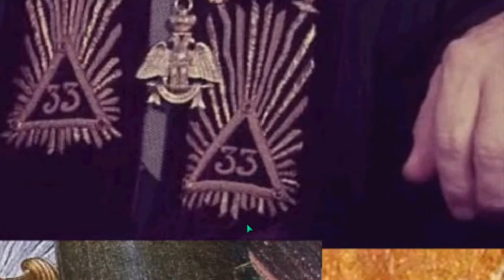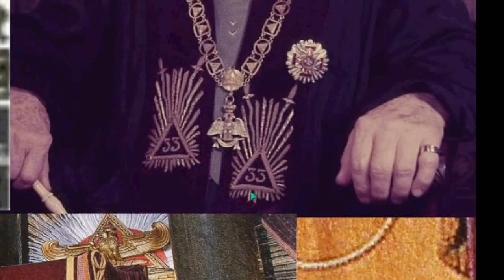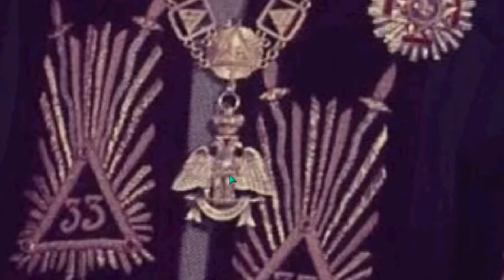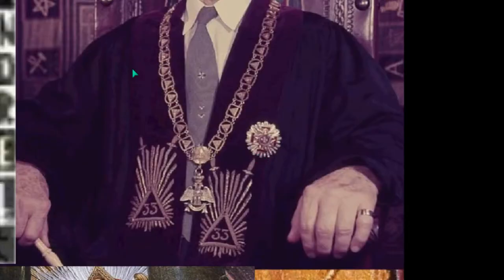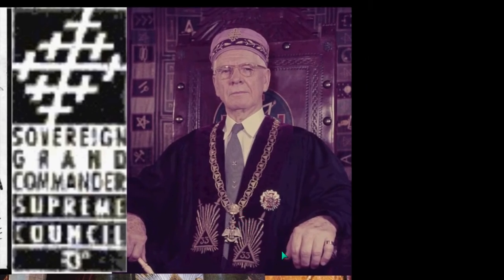He is a 33rd degree Freemason. You see that with this illuminated triangle — 33 degrees is that illumination. You also have this strange similarity and these counterfeits with Jesus starting his ministry at 30 and dying at the age of 33. Very interesting similarities, but they are fundamentally different because they are complete opposites. So you have the double-headed eagle and the emblem of the 33rd degree here. There are more degrees after the 33rd degree — up to 99 degrees, just to inform you.